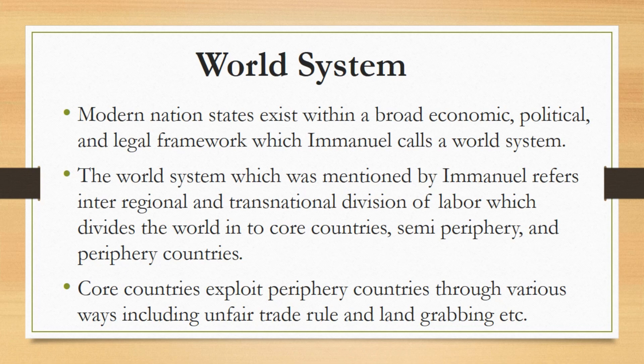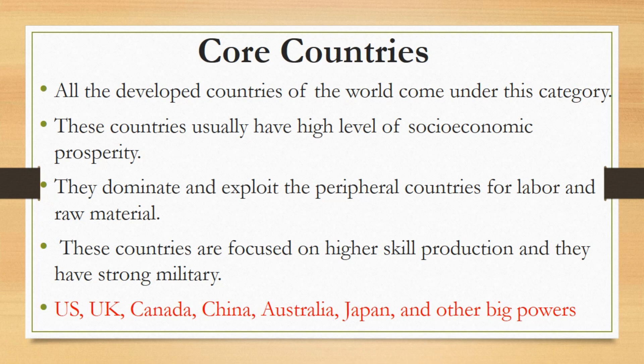Core countries: All the developed countries of the world come under this category. These countries usually have a high level of socio-economic prosperity. They dominate and exploit the peripheral countries for labor and raw material. These countries are focused on higher skill production and they have strong militaries. In short, the core countries are powerful states. United States, UK, Canada, China, Australia, Japan, and other big powers are basically the core countries.